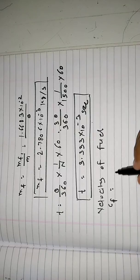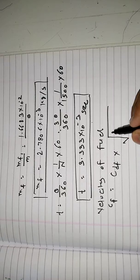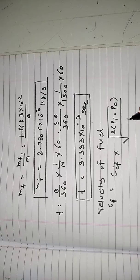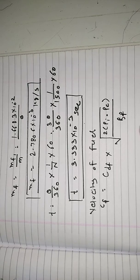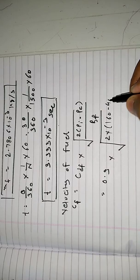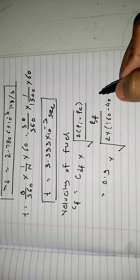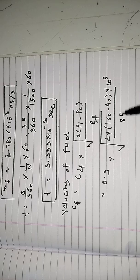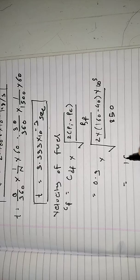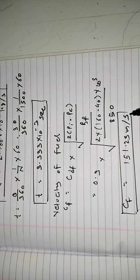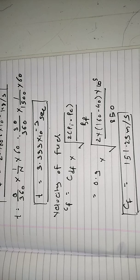Next, we find the velocity of fuel CF using the formula: CF equals CDF times square root of 2(PI minus PC) upon rho F. Substituting: 0.9 times square root of 2 times (160 minus 40) times 10 to the 5, divided by 850 (fuel density for specific gravity 0.85). This gives CF equals 151.23 meters per second.